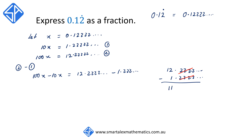So on the left, 100x minus 10x is equal to 90x. And on the right, we have 11. We then divide both sides by 90, so that we get x is equal to 11 over 90.